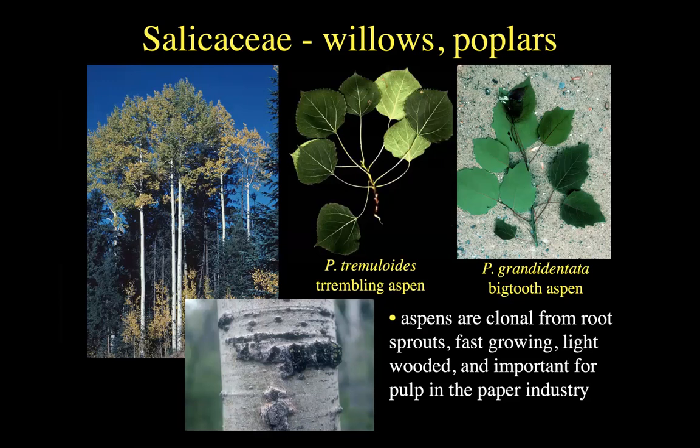Aspen forms huge massive clonal populations coming up from root sprouts. Groves of aspen have been postulated to be some of the oldest living things in the whole world if you consider them all one genetic individual recurring over centuries. They are certainly very important in succession stories with fire and wars with gymnosperms in the high country.